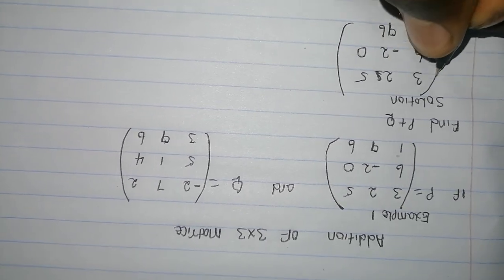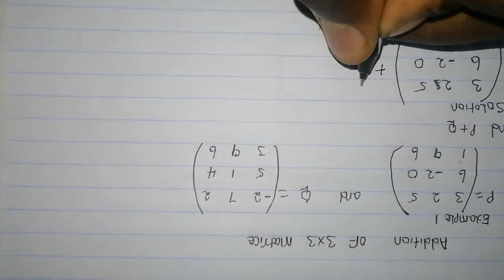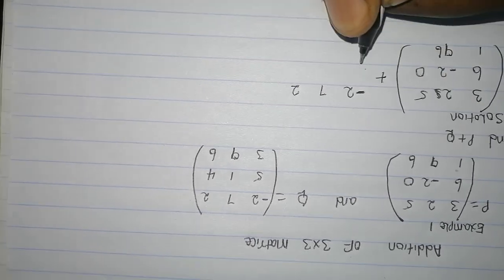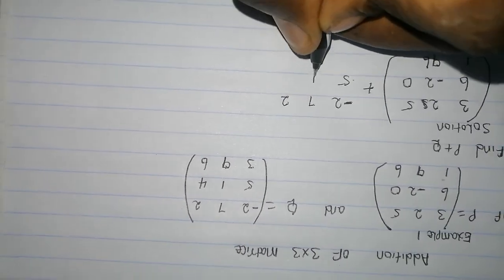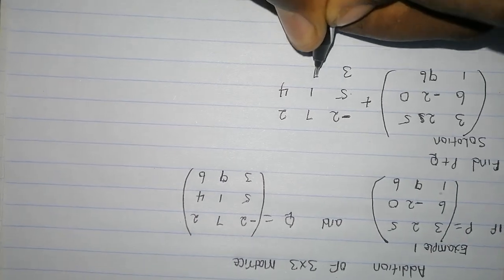then you add to Q, which is negative 2, 7, 2, 5, 1, 4, 3, 9, 6.